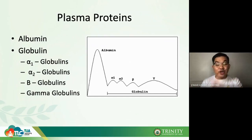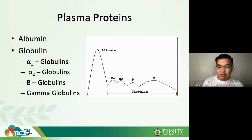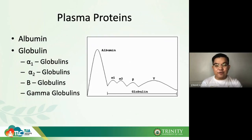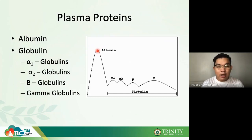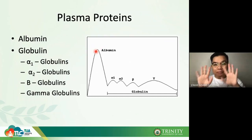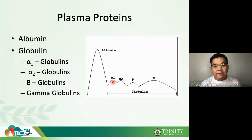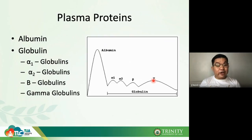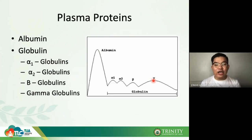Globulins can be subdivided into four: alpha-1, alpha-2, beta, and gamma globulins. We can separate them using electrophoresis. The most abundant plasma protein when comparing albumin and globulin is actually albumin, followed by alpha-1, alpha-2, beta, and gamma.